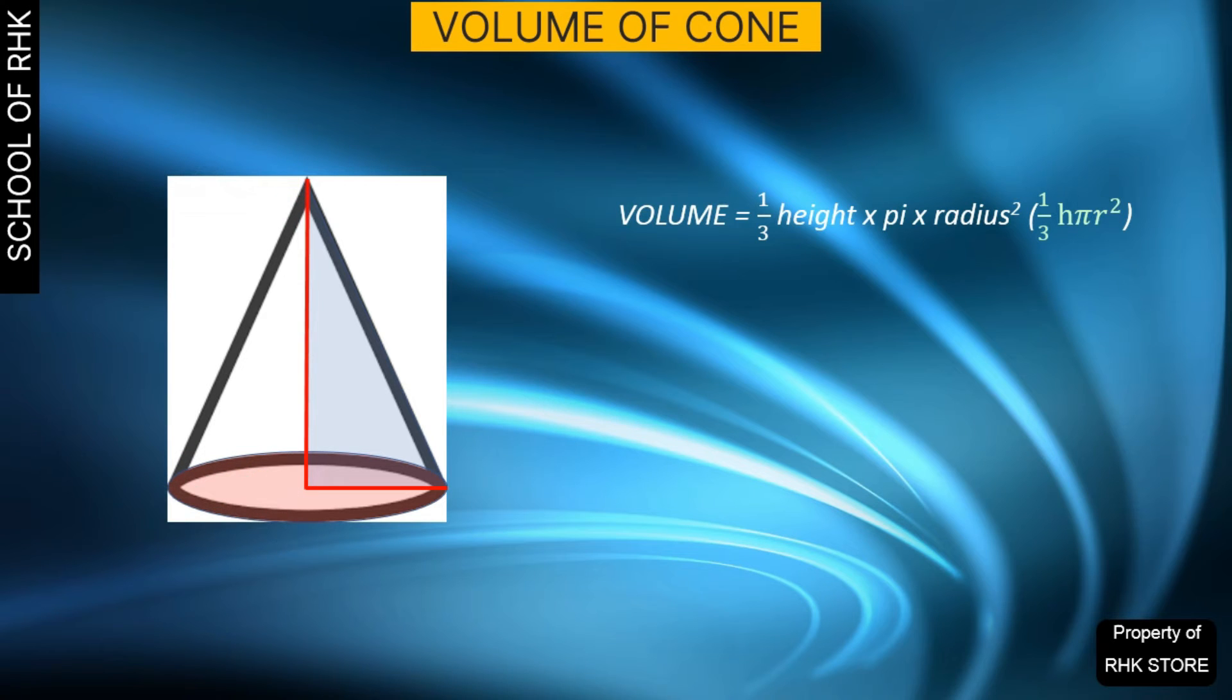The radius of the base of the cone is three meters and its height is nine meters. So first, let's put the radius into the equation and square it: three meters multiplied by three meters